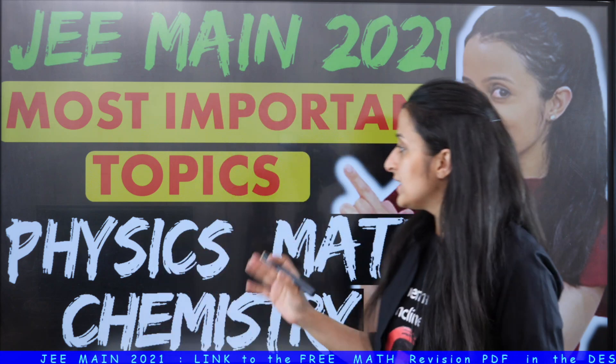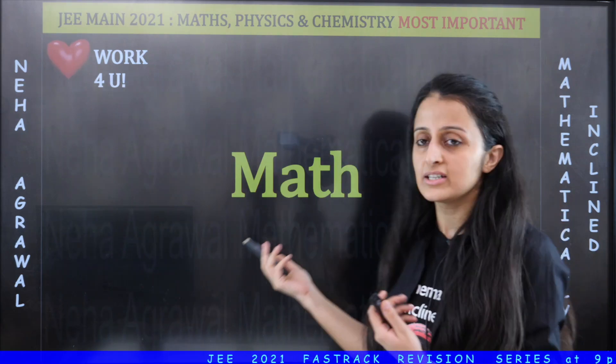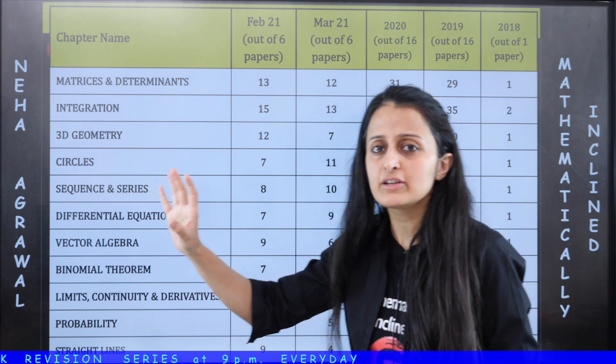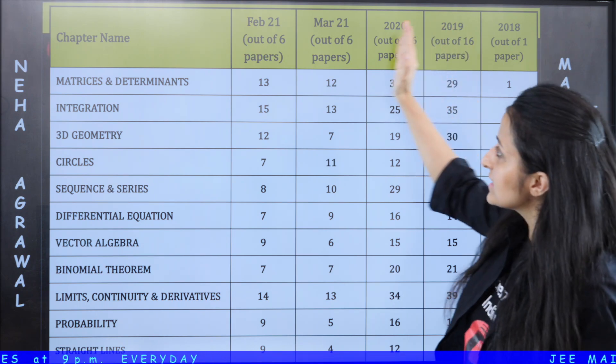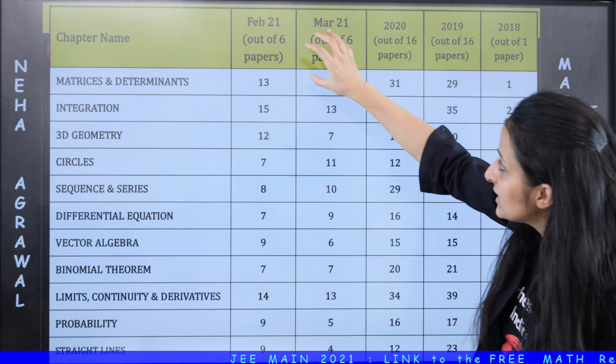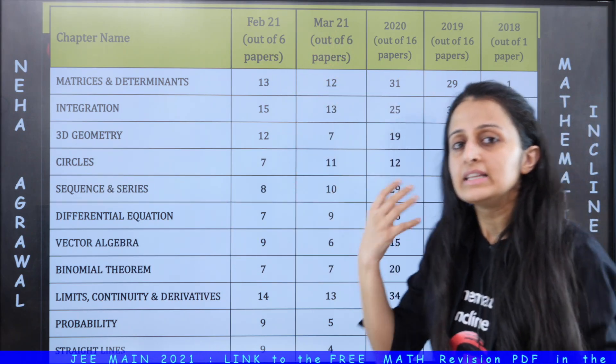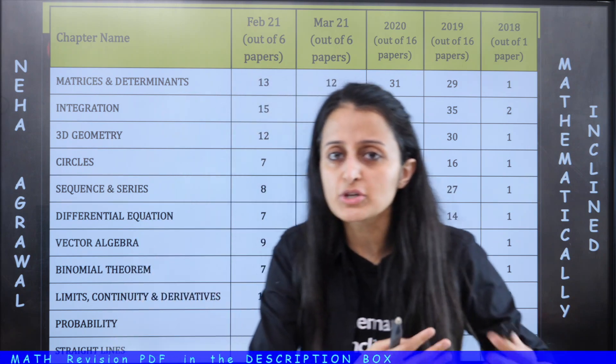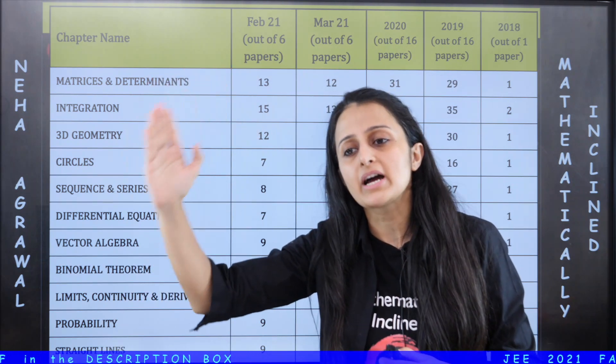a lot of you have been asking me ki physics, chemistry, math ke aise kaun se topics hain matlab ki chapter-wise aise kaun se topics hain jo sabse zyada repeat hote hain, sabse zyada important hain as per NTA. To us convenience ke liye ye aapke saath share karne wali hun, iski PDF bhi laga dungi description mein. Now sabse pehle yaha par kya karne ki koshish ki hai - for example maths 2018 se leke 2021 tak ke jitne bhi papers huye hain, har chapter mein kitne papers mein kitne questions pooche gaye hain. This gives us an idea ki yaar NTA kin chapters ko sabse zyada importance dete hue ja raha hai. To this helps you ki haan achha in top chapters ko mujhe priority pe rakhna hai.